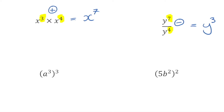For our third indice law, when we raise the power of a base to a further power, we actually have to multiply the indices. So for this example, we've got a to the power of 3, which we're then raising to the power of 3 again. In this scenario, we actually have to multiply these indices. So a to the power of 3, all raised to the power of 3 again, is a to the power of 9.